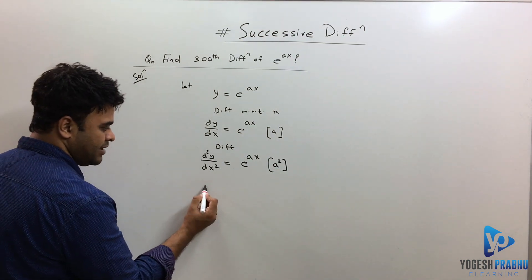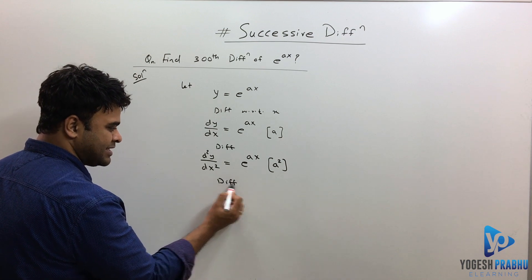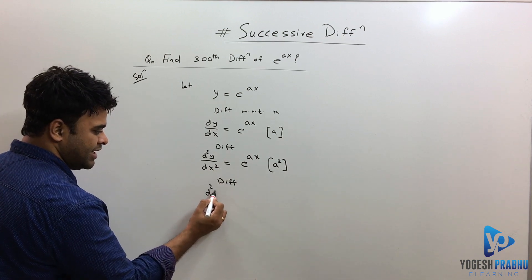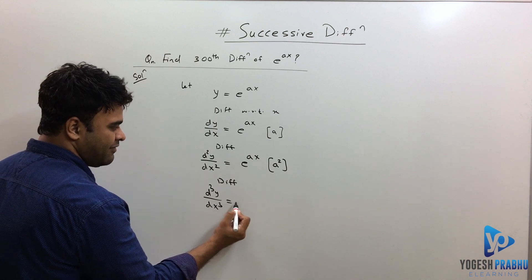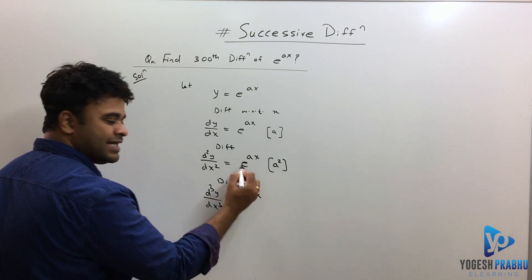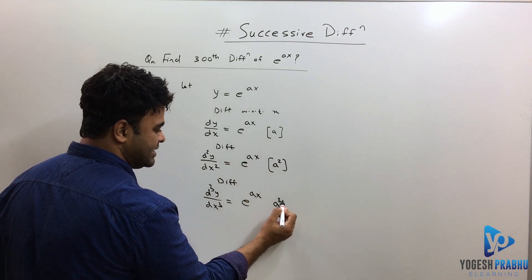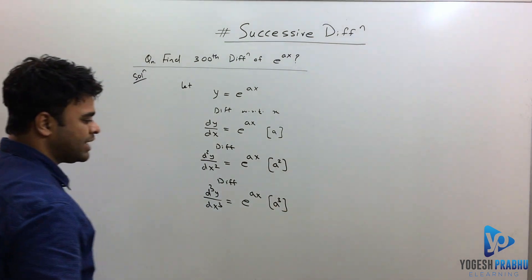If I differentiate this again, supposing if I differentiate again, I'll get the third derivative. So this is d³y/dx³, and the value will be e raised to ax as it is, and I'll get one more a. I hope you can see that already.